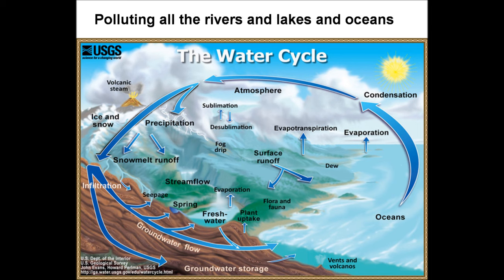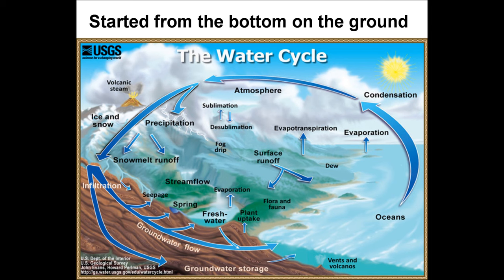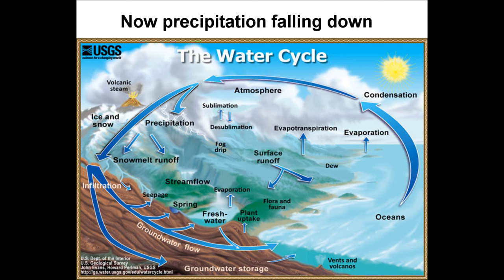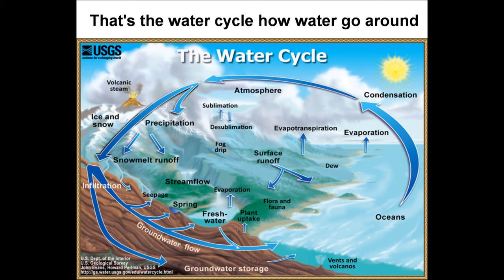Cause it started from the bottom on the ground, it evaporated and condensed into a cloud. Now precipitation falling down — that's the water cycle, how water go around.